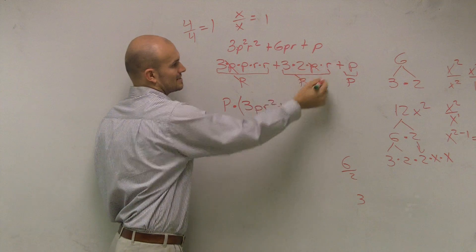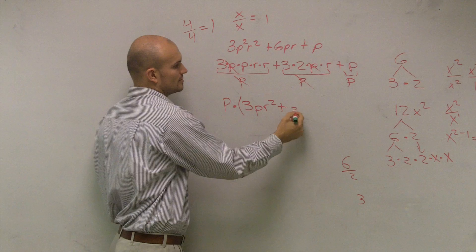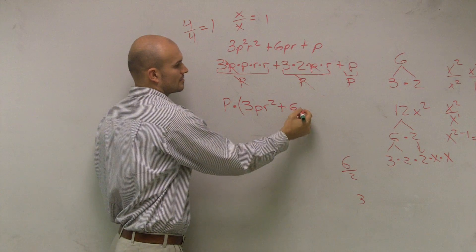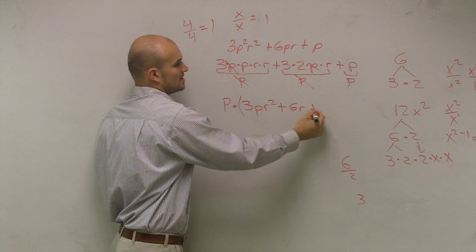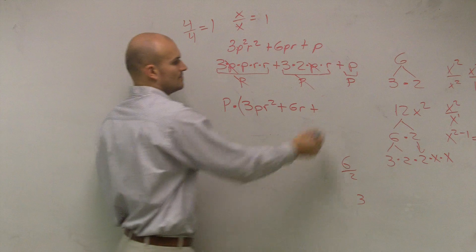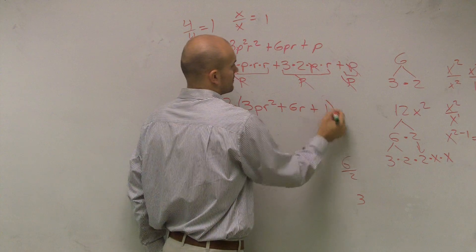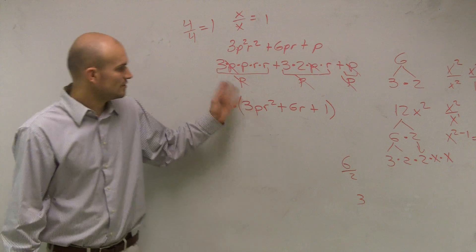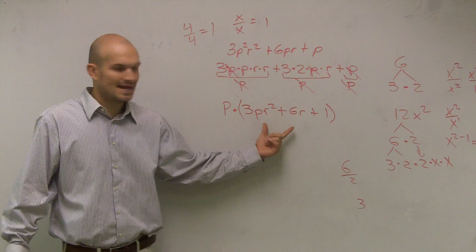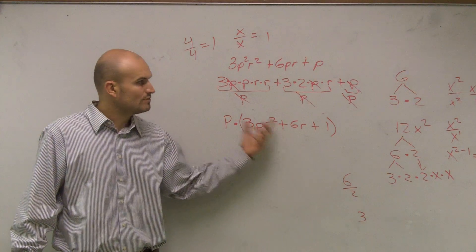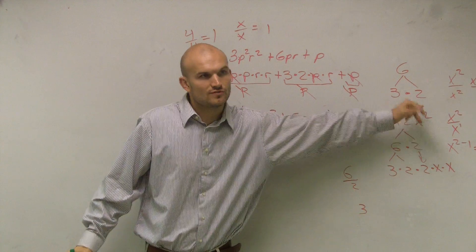Plus, again, cancel out. 3 times 2 becomes 6r. Plus, p divided by p is again 1. So remember, even though I divide everything by p and I get my answer, we write it as a product of the two factors.